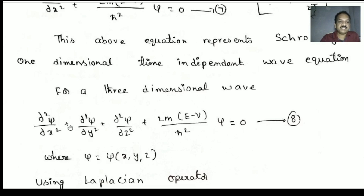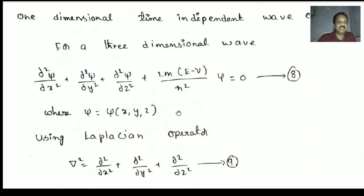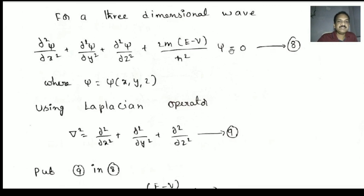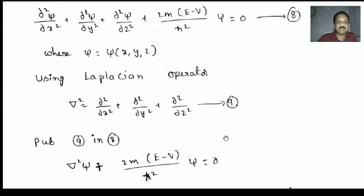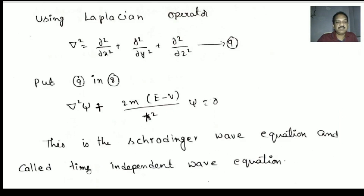For a three-dimensional wave equation we add y and z components: ∂²ψ/∂x² + ∂²ψ/∂y² + ∂²ψ/∂z² + (2m(E−V)/ħ²)ψ = 0. This is the eighth equation, where ψ = ψ(x,y,z). Using the Laplacian operator ∇² = ∂²/∂x² + ∂²/∂y² + ∂²/∂z², we get ∇²ψ + (2m(E−V)/ħ²)ψ = 0. This is Schrödinger's three-dimensional time-independent wave equation.